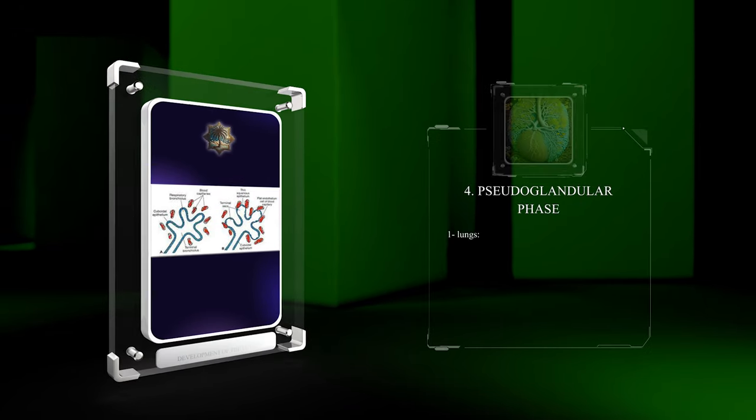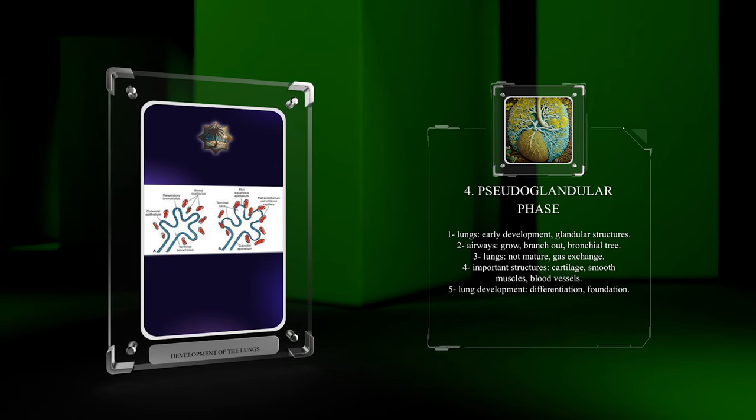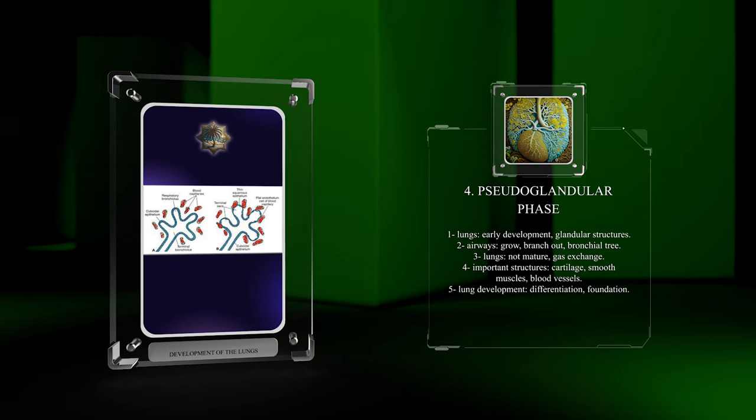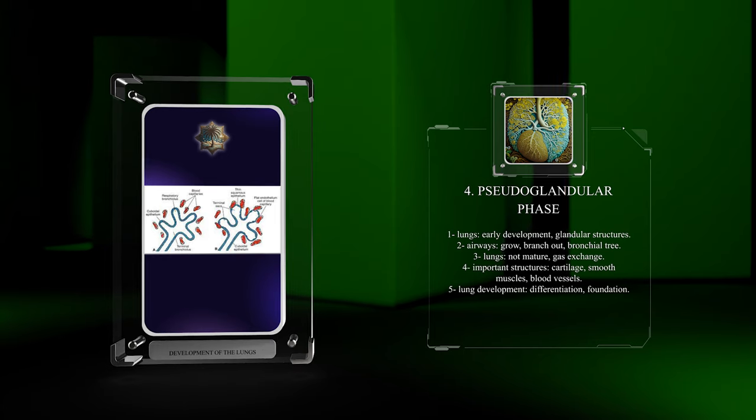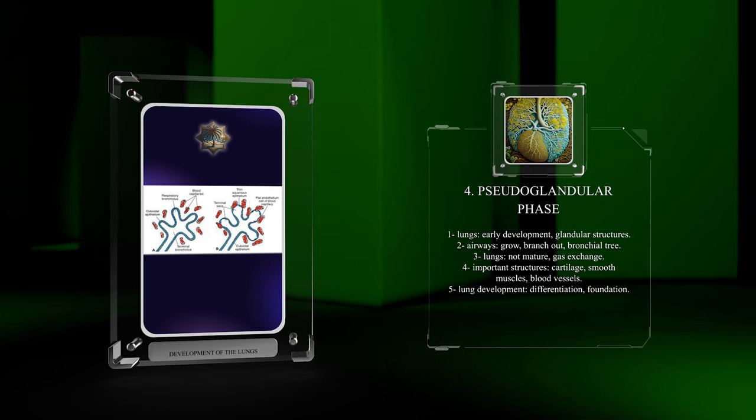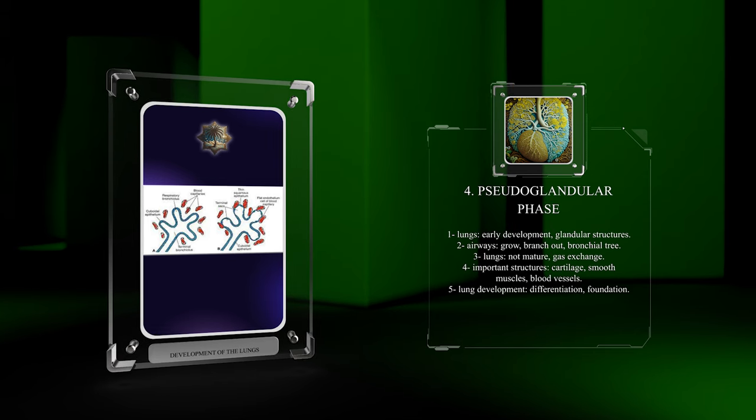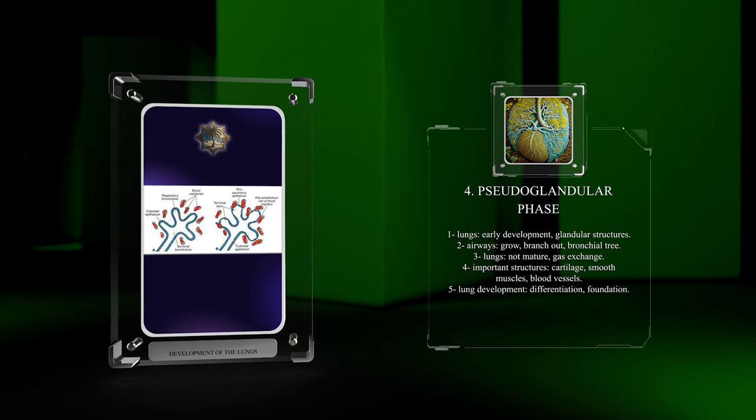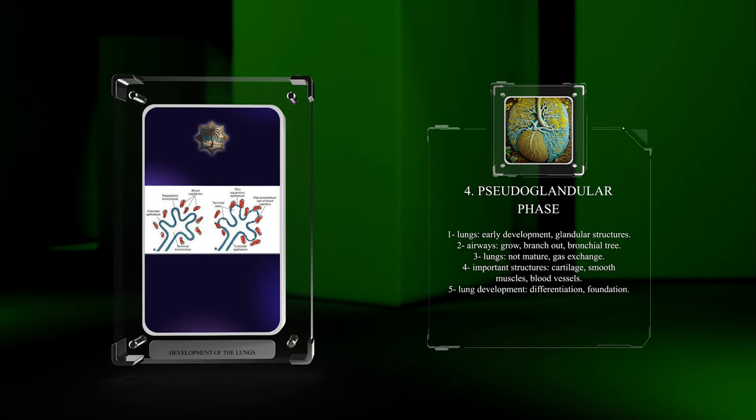At this stage, the lungs are still in their early development and resemble glandular structures. The airways grow and branch out, forming the bronchial tree. However, the lungs are not yet mature enough to support gas exchange. Important structures like cartilage, smooth muscles, and blood vessels start to differentiate during this phase and set the foundation for later stages of lung development.